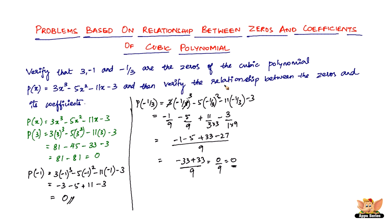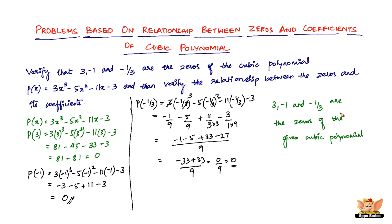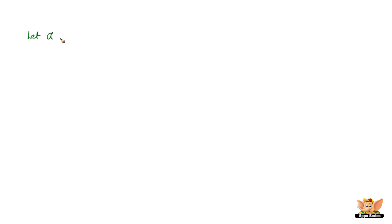Now that we've verified all three zeros, we need to verify the relationship between the zeros and the coefficients. We've confirmed that 3, minus 1, and minus 1 by 3 are the zeros of the given cubic polynomial. Let alpha equal 3, beta equal minus 1, and gamma equal minus 1 by 3. The first relationship is the sum of the zeros: alpha plus beta plus gamma.